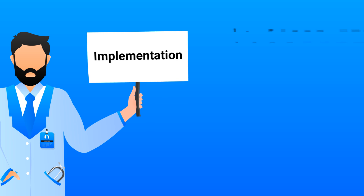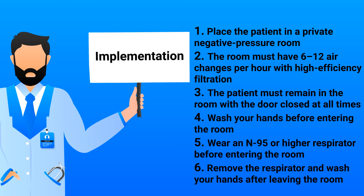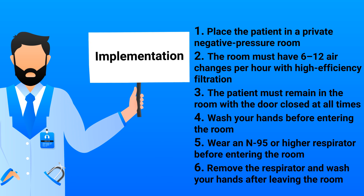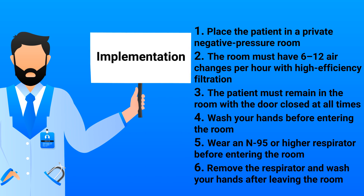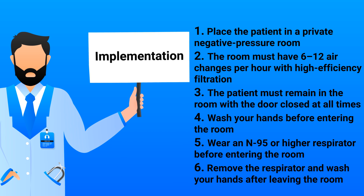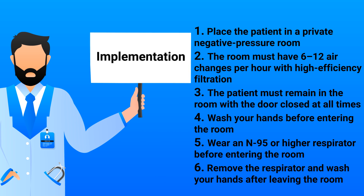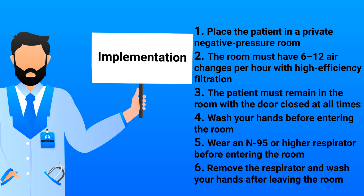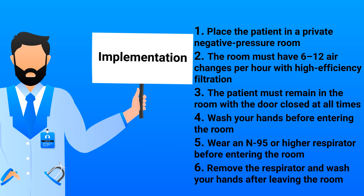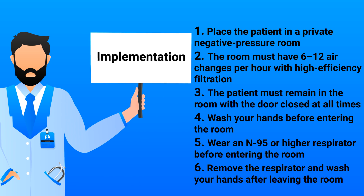The implementation of airborne precautions involves the following steps. First, place the patient in a private negative pressure room that performs six to twelve air changes per hour with high-efficiency filtration. The patient must remain in the room with the door closed at all times. Before entering, wash your hands and put on an N95 or higher respirator. After caring for the patient, exit the room, then remove the respirator and perform hand hygiene.